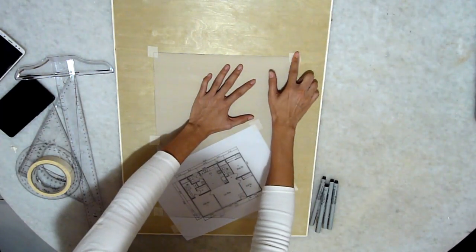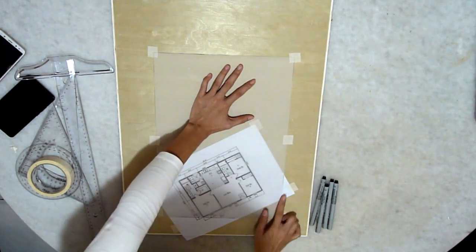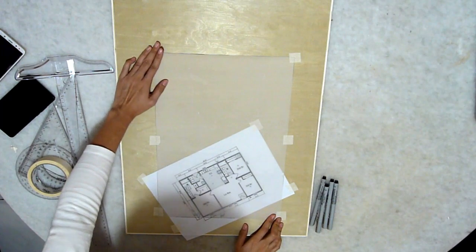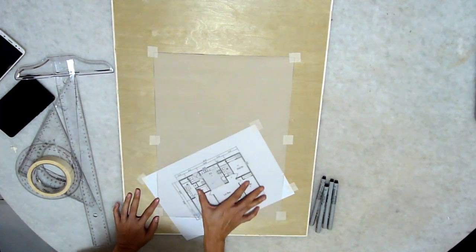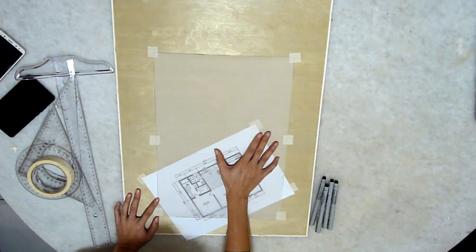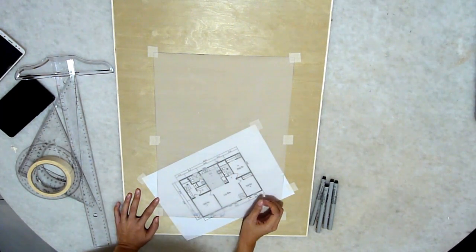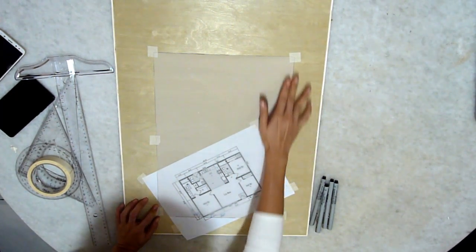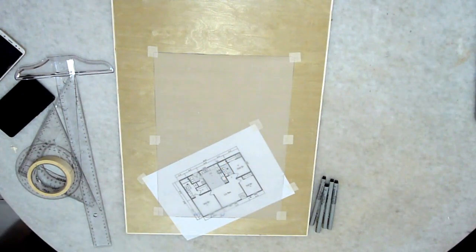And once you have done so, make sure you have the tape taped properly on the edges to avoid the tracing paper from sliding up and down or even budging a little bit as you project. So make sure the masking tape is secure in its place before you start.